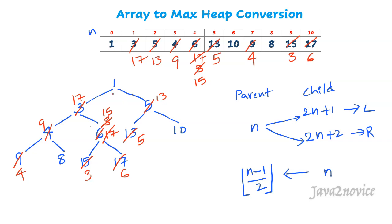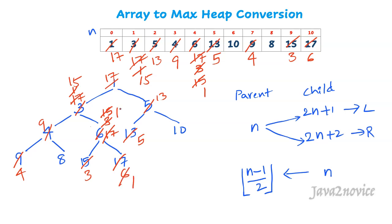Let's move to the next node, which is the root node. 1 is the value, which is smaller than its children 17 and 13. 17 is the highest, so we swap: 17 goes to the root and 1 goes down. Now in this subtree, 1 is a parent smaller than its children 9 and 15. Since 15 is the highest, we swap: 15 goes up and 1 goes down. Again, 1 is a parent smaller than its children, and 6 is the highest, so we swap: 6 goes up and 1 goes down. We apply each swap in the array as well. We have reached a leaf node, so no further heapification is possible.